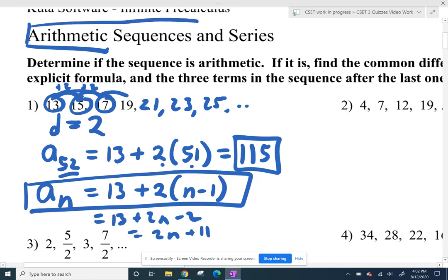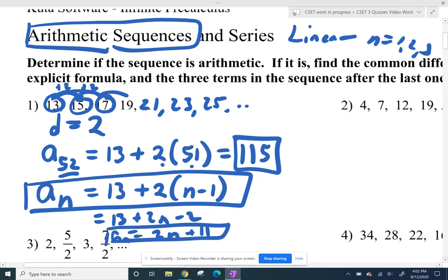So these arithmetic sequences are basically just linear functions, except we're only dealing with - we can only put in one, two, three for our first term, second term, third term, versus functions where we can put in like 1.2 and 1.3 and things like that. So there you go, that's that one.